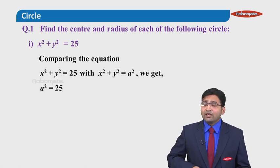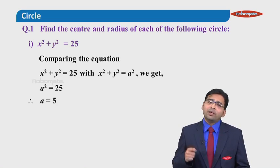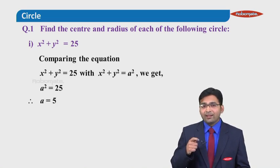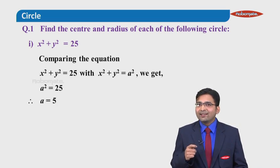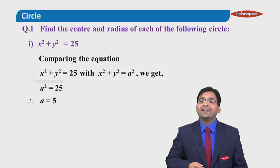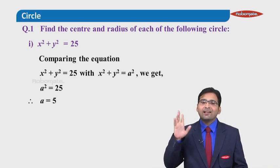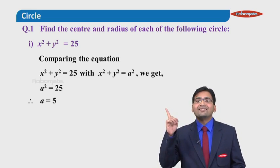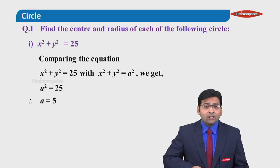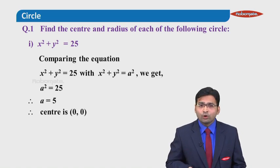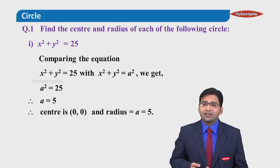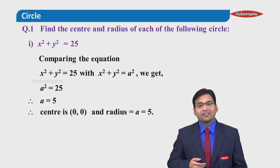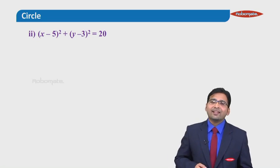We get a square is equal to 25. If a square is 25, I can say a will be 5. 'a' was the radius, so I got radius of the circle as 5. If radius is 5 and if it is a standard circle, I can immediately say the center of the circle is going to be 0, 0 whereas radius of the circle will be 5.